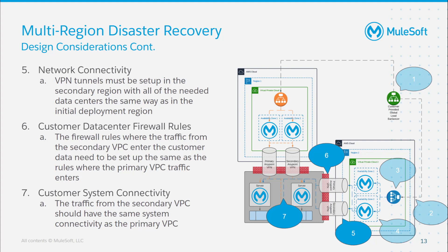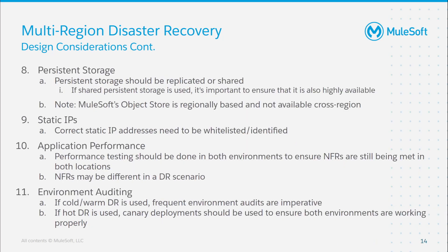You need to ensure that your network gateways to the customer data centers are configured the same way as the primary network gateways so that secondary region applications have the same connectivity as the primary regions. In order for secondary applications to have access to customer data center applications, firewalls need to be set up to allow traffic to flow properly, and traffic should be able to traverse the network to reach whatever applications it needs to connect to on-premise — whether they are Mule runtimes or other customer-hosted applications. If your applications are using persistent storage, that storage should be available to both the primary and secondary deployments, or two-way replicated so both remain in sync. Persistent storage should also be highly available, as it can be a single point of failure whether or not the application is deployed to multiple regions.